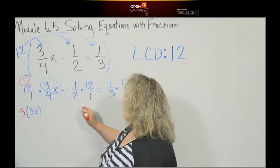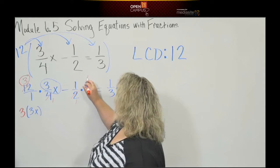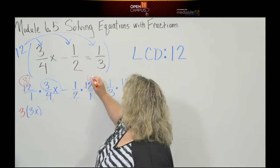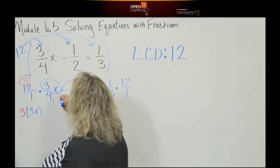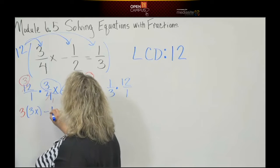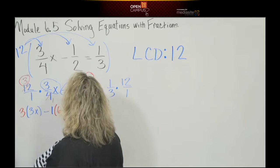Over here, I'm going to say two divides into two once, two divides into twelve six times. So that leaves me a six, and that leaves me negative one. So negative one times six, okay?